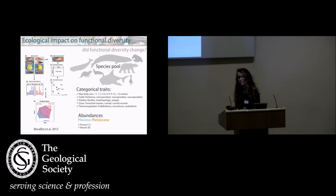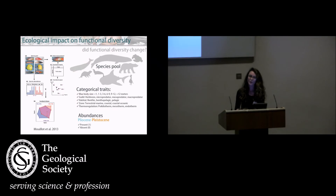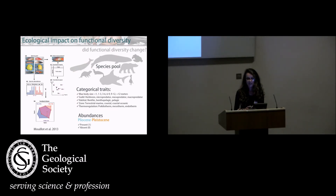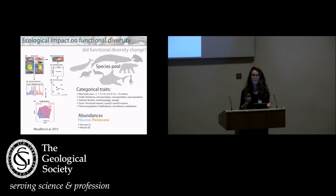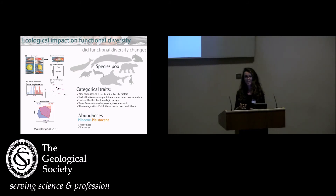We did that, but not for the entire Cenozoic — only for the Pliocene and Pleistocene. We assigned traits as in the previous analysis: body size, diet, habitat zone, and thermoregulation, and we built two spaces based on the presence and absence of species in our community.